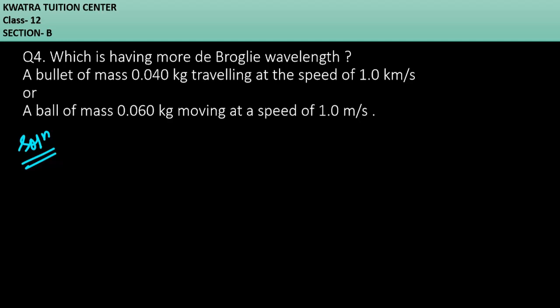So in the first case, you have mass B, that is 0.040 kg. And speed B is basically 1 km per second. So here you have to change units. It must be SI units. So how do we write 1 km per second? 10 to the power 3, it will be meter per second.